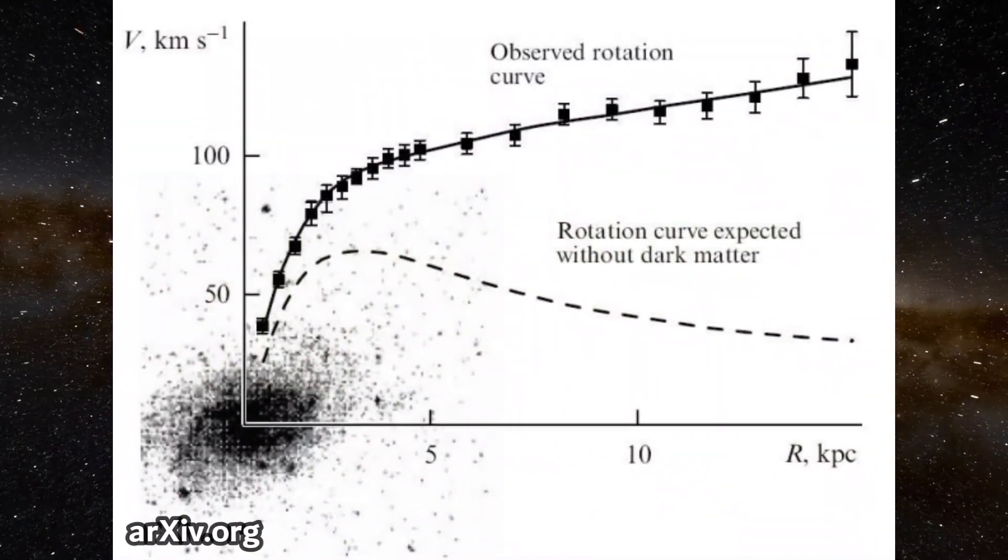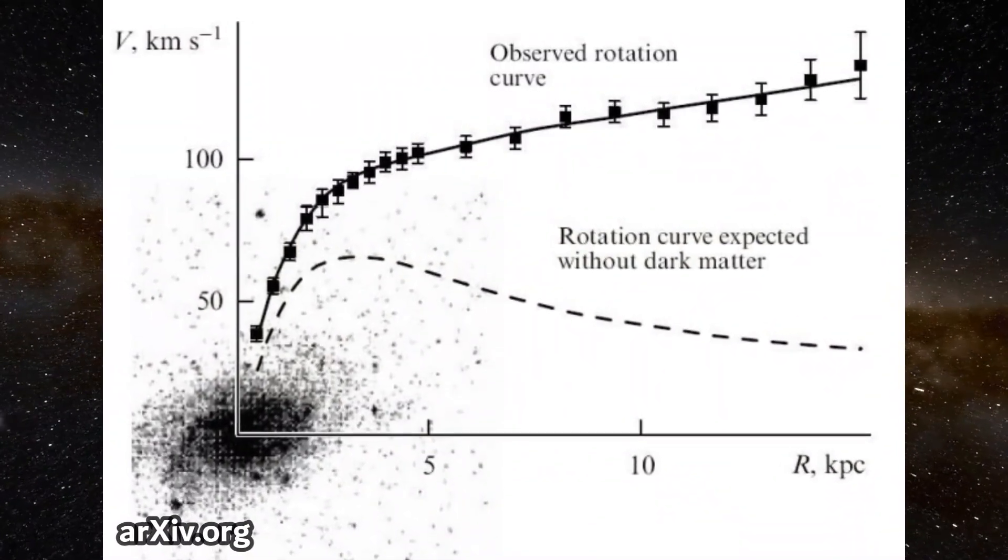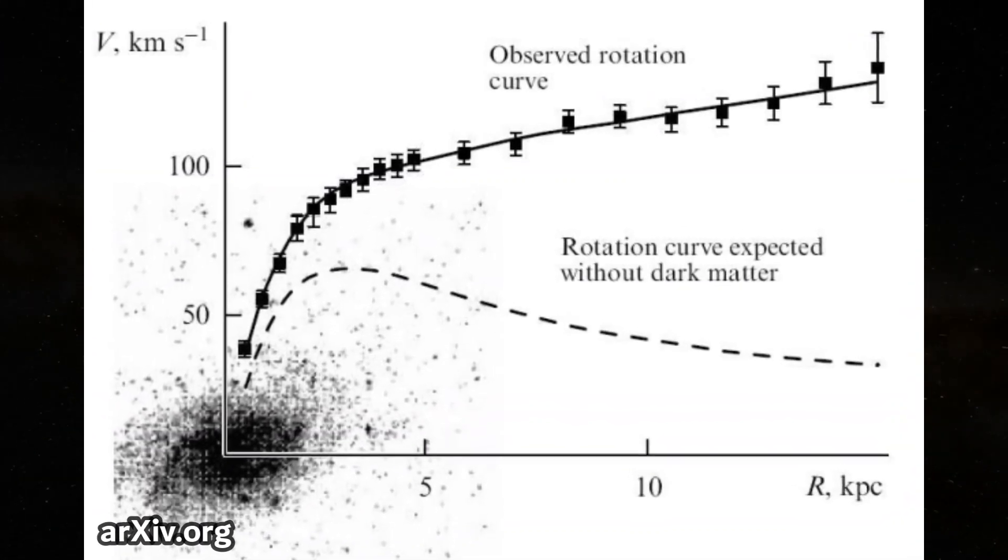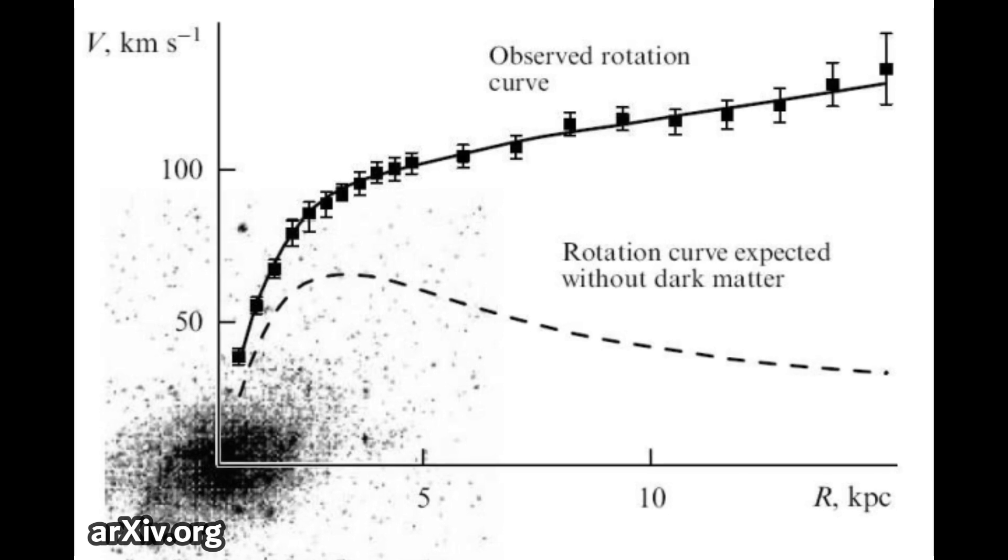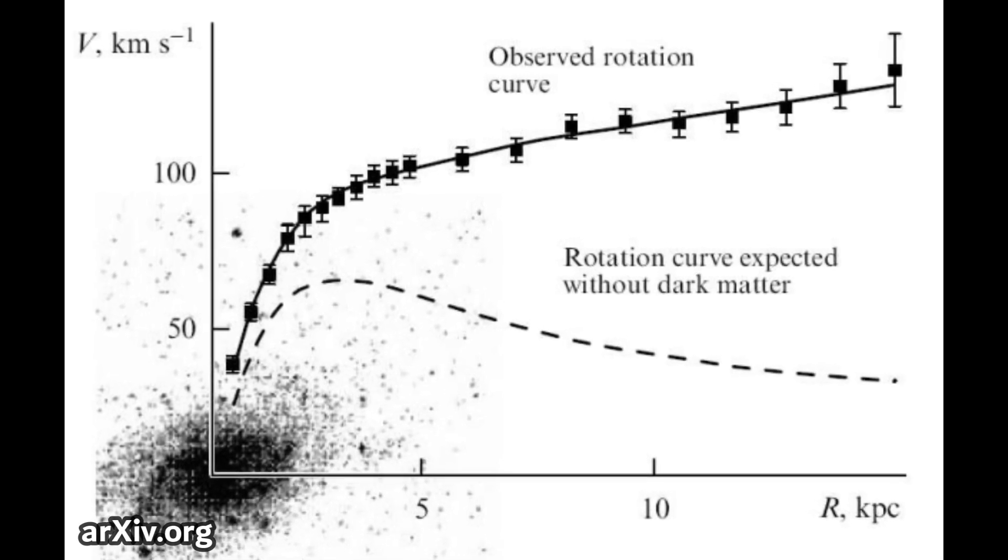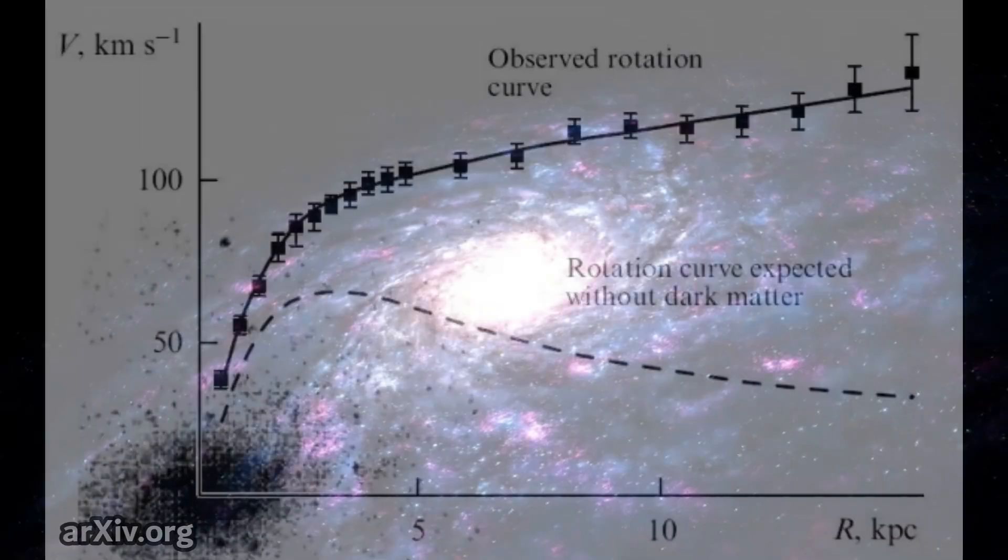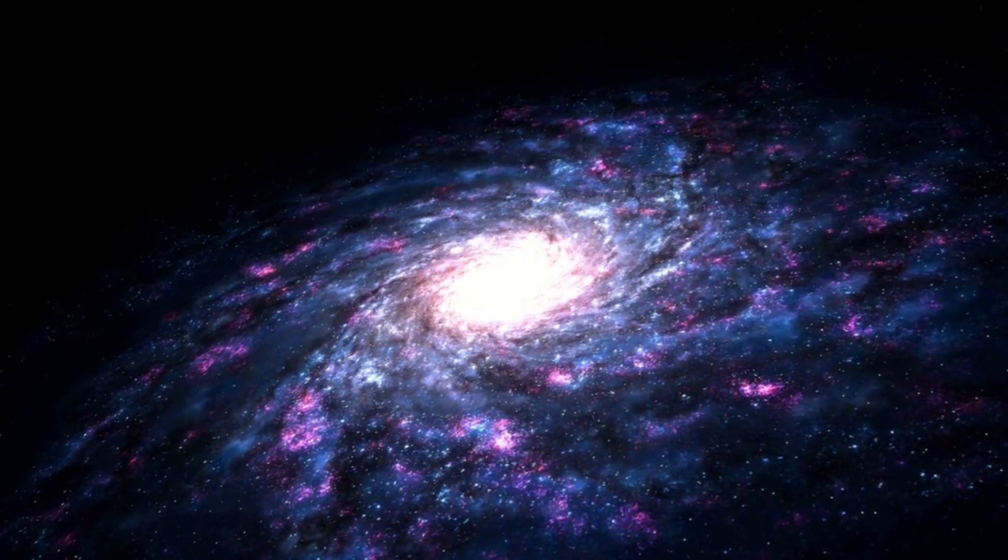This is not true however, as when astronomers were examining spiral galaxies in the 1970s, they found that the stars, rocks, and other matter were all traveling relatively at the same speed, regardless of whether they were located in the very center of the galaxy or at the very edge of the galaxy.